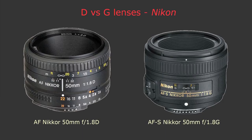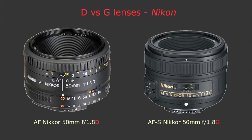Nikon also has G and D type lenses. The main difference is that D lenses have an aperture ring, with which you can physically control the aperture on the lens rather than with the dial wheel on the camera. D lenses can also be used on older cameras, all the way back to the first Nikon camera from 1959. G lenses don't have an aperture ring and cannot be used on older cameras that require one, unless you want to be stuck using the minimum aperture all the time.